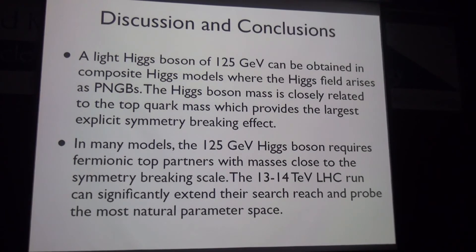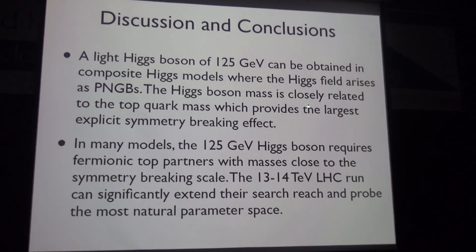To summarize the composite Higgs discussion: a 125 GeV Higgs can be obtained in composite Higgs models if the Higgs is a pseudo-Nambu-Goldstone boson of some strong dynamics preserving a larger global symmetry. The Higgs mass is closely related to the top quark mass because the top sector provides the largest explicit symmetry breaking term. In many models, achieving this Higgs mass requires fermionic top partners with mass very close to the symmetry breaking scale, which upcoming LHC searches can probe.